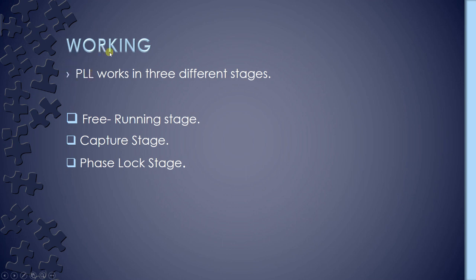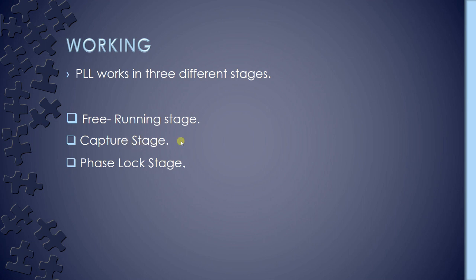The PLL works in three different stages. The first is the free running stage, the second is the capture stage, and the third is the phase lock stage. The free running stage is where there is no voltage applied. As soon as the input frequency is applied, the voltage controlled oscillator starts to change and produce an output frequency for comparison — this is called the capture stage. Comparison stops as soon as the output frequency adjusts to become equal to the input frequency, and this is called the phase lock stage.